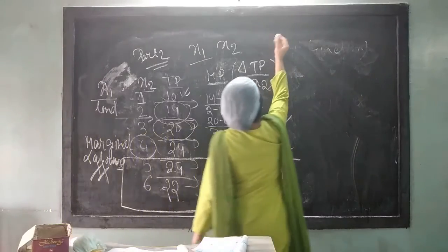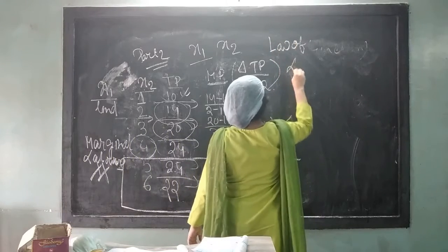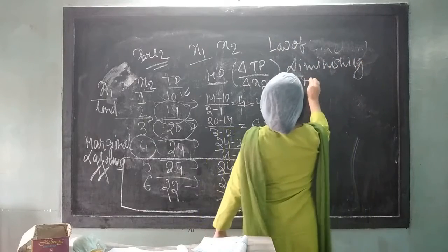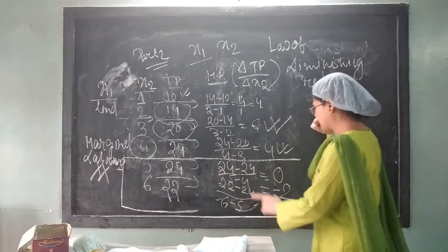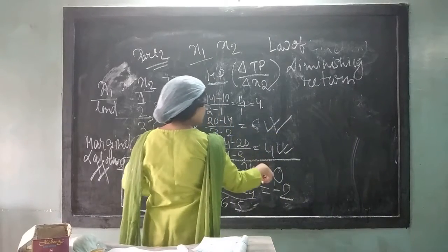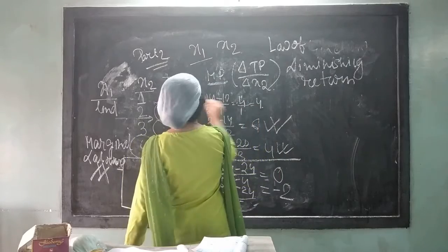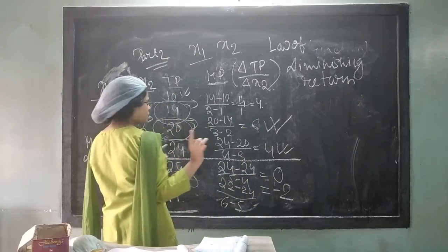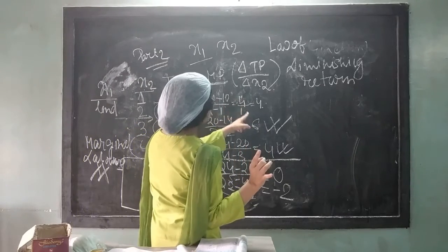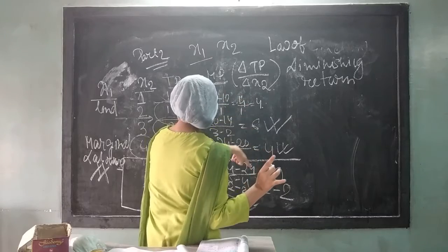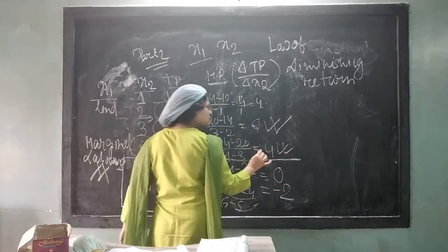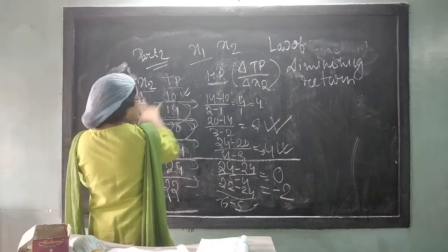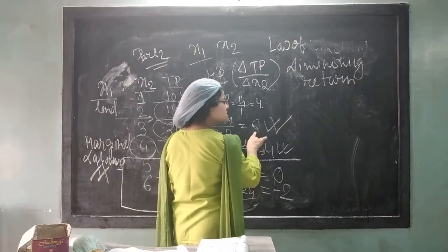So this what I have taught is for the law of diminishing return because the return is diminishing. After 4 unit what is happening? 0 minus 2 it is diminishing. You are seeing after 2 units when 3 units of labor has been employed obviously it helps to enhance the production by 6 units. But afterwards when the 4 units of labor has been employed the additional contribution is 4. Whereas when the 3 unit of labor has been employed his contribution was 6.